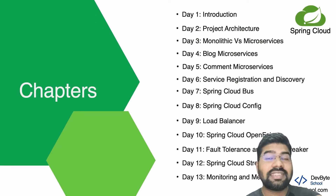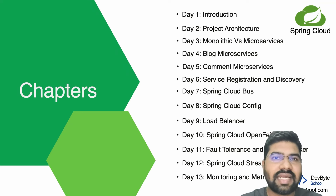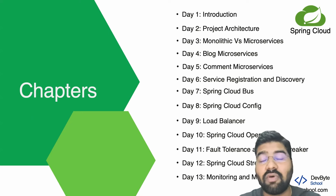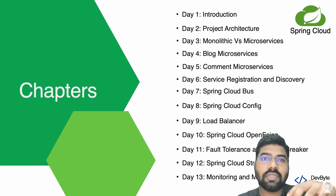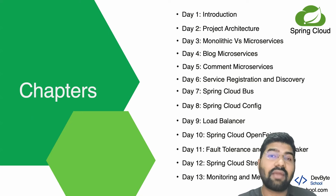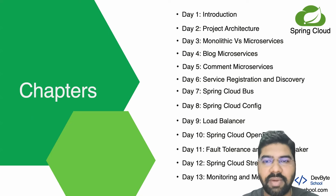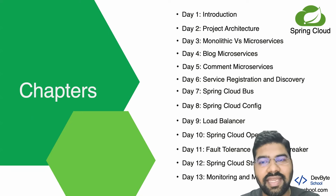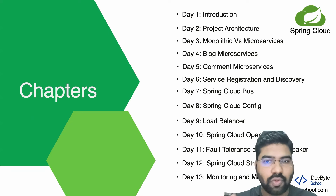So what chapters exactly are we covering in this playlist? First, we design our whole project architecture. After that, we understand what monolithic and microservice are and the advantages of both — in what requirement you need to select monolithic, and in what requirement you need to select microservice. After that, we create one blog microservice, then a comment microservice. Then we create service registry and discovery and register all our microservices to them.